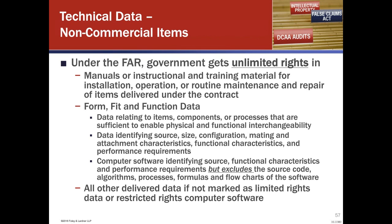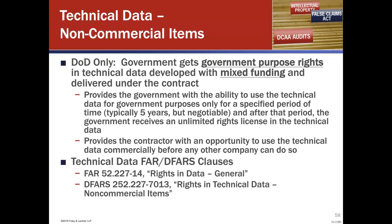The Department of Defense has their own rules in that they have another category of rights called government purpose rights. So if there is mixed funding — funded both at government and private expense — the government gets government purpose rights in that technical data. For a specific period of time, usually five years but it's negotiable, the government can use that data for government purposes only, including for manufacture. After that period expires, the government then receives an unlimited rights license in that technical data.